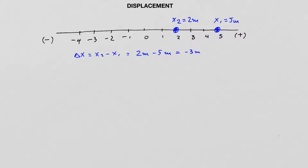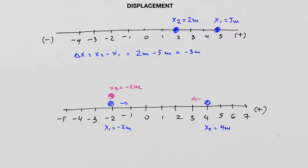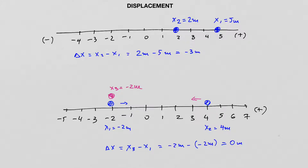We get a negative sign in front of the displacement. Let's look at a more complicated example: a particle initially at minus 2 meters moves to x2 at 4 meters, then moves back to minus 2 meters. The displacement is the final position x3 minus the initial position x1: minus 2 meters minus minus 2 meters equals 0 meters. When a particle starts and ends at the same position, the net displacement is 0.